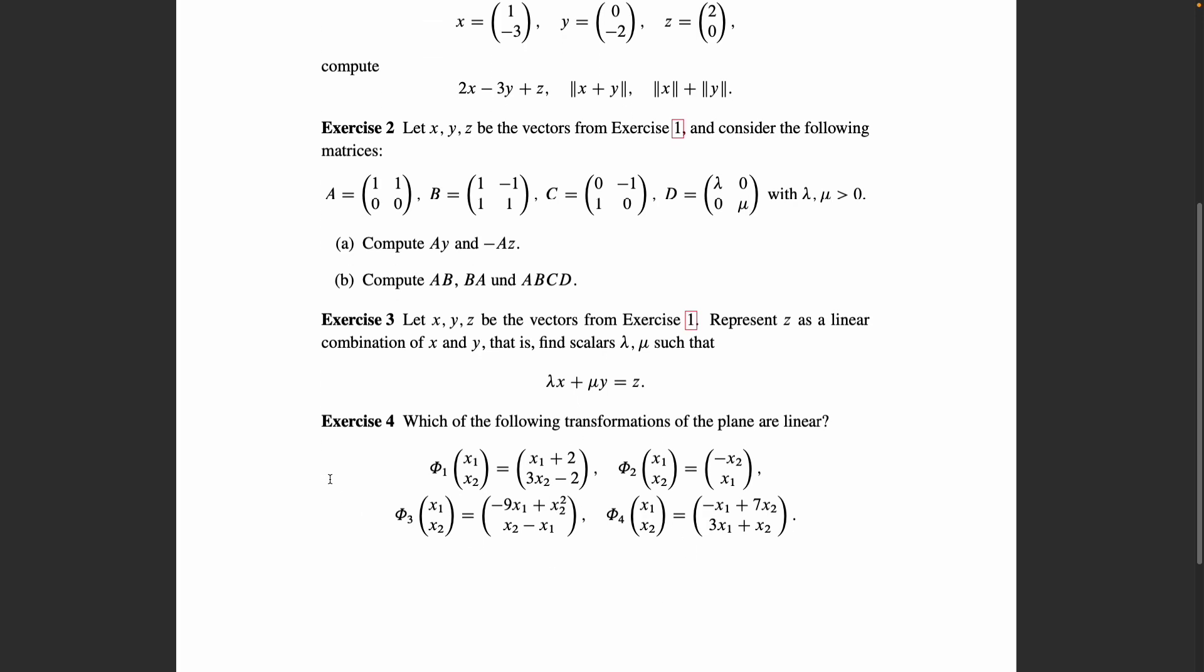Exercise four, here you just check which of the following four maps are actually linear: phi 1, phi 2, phi 3 and phi 4. They all take a 2D vector as input and output another 2D vector given by the respective equations here. Your job is to find out which one of these are linear and which one are not.